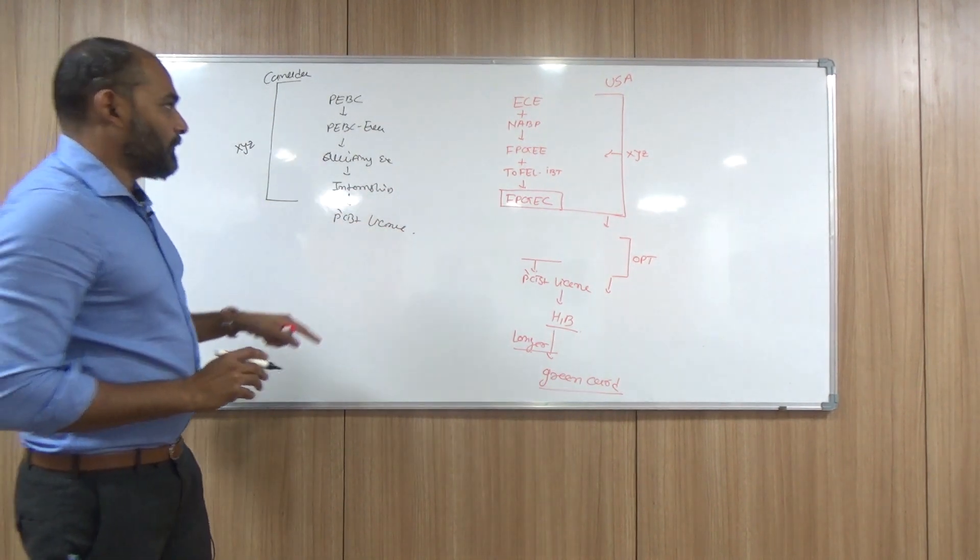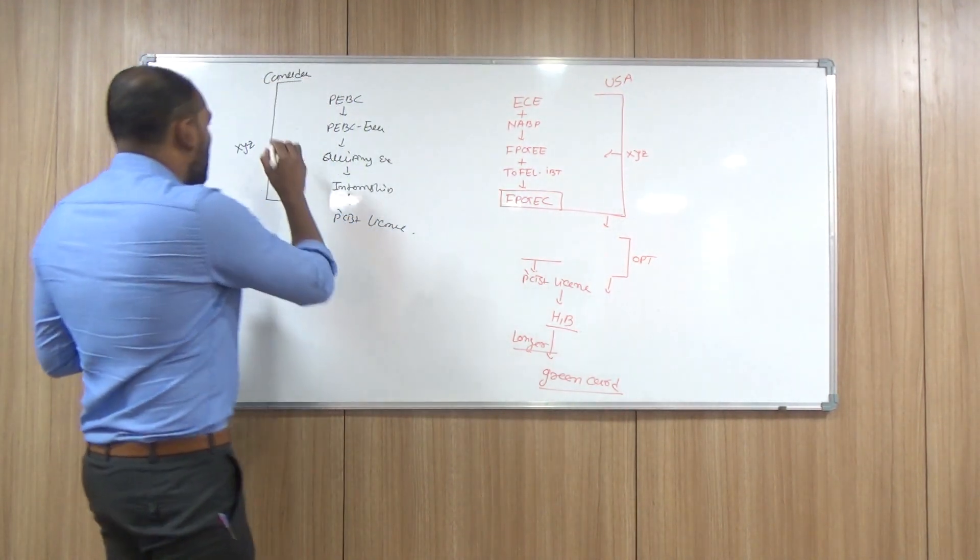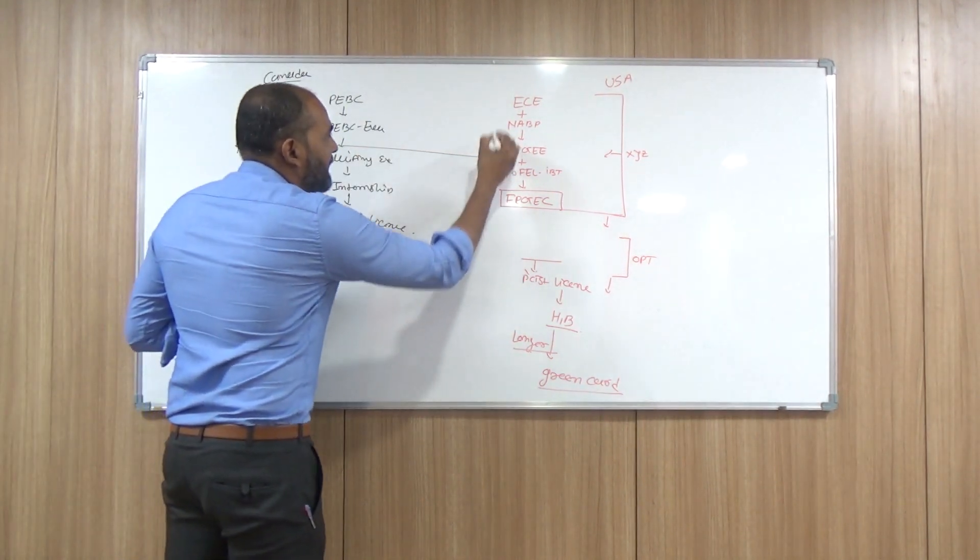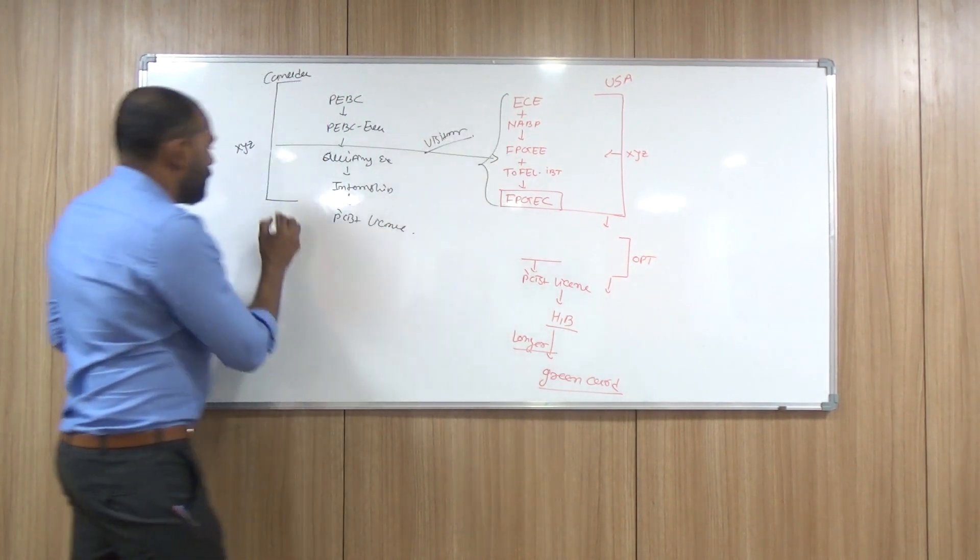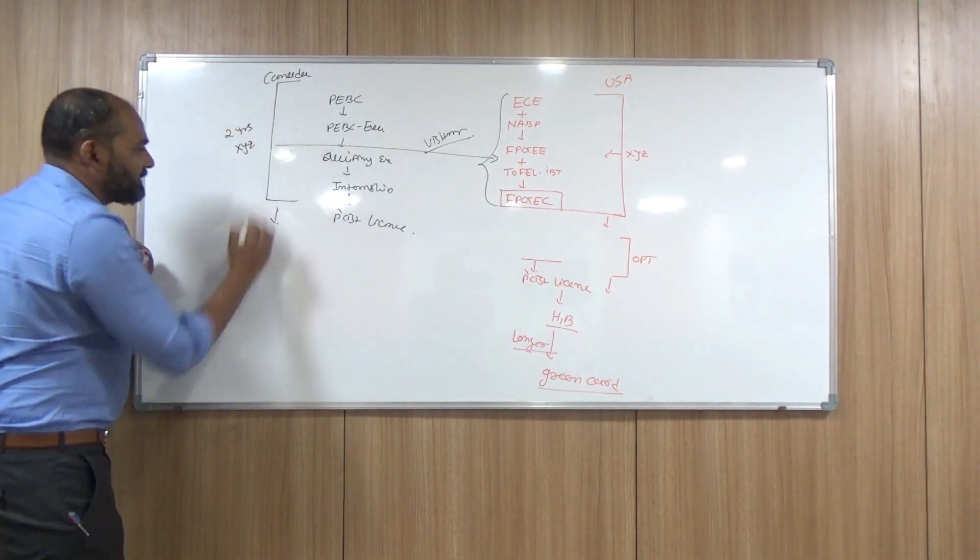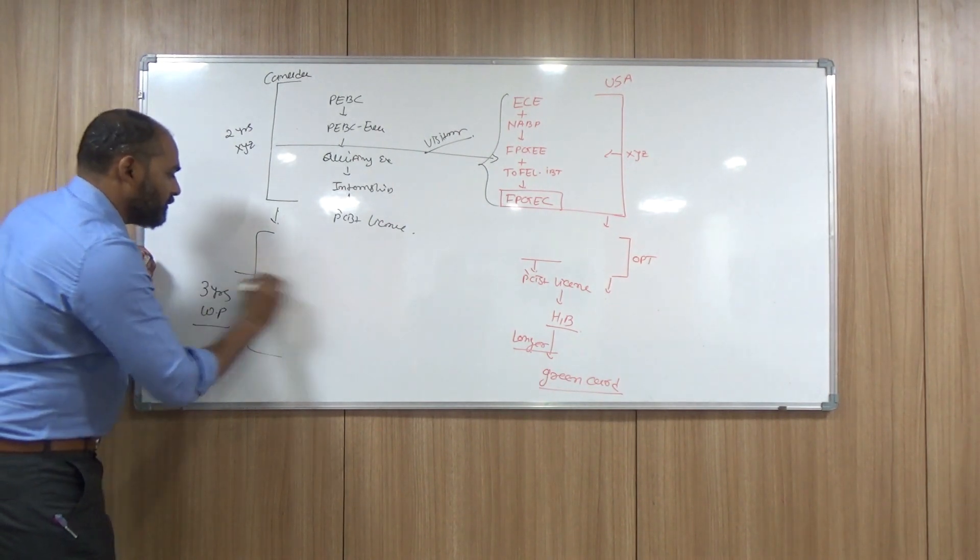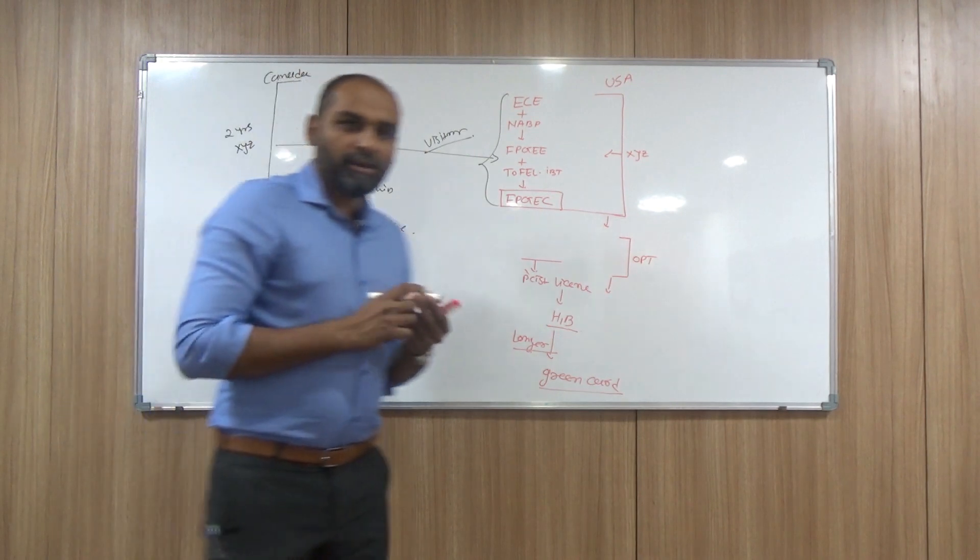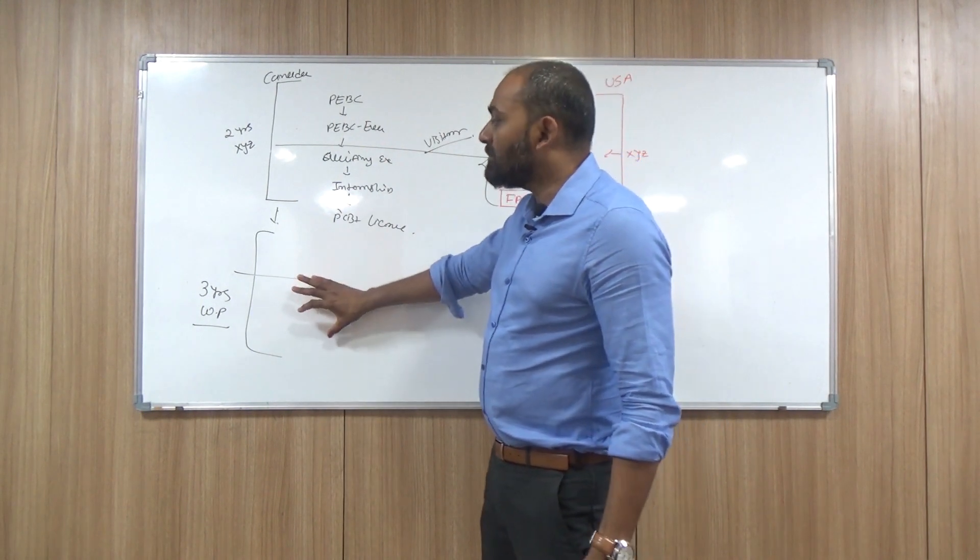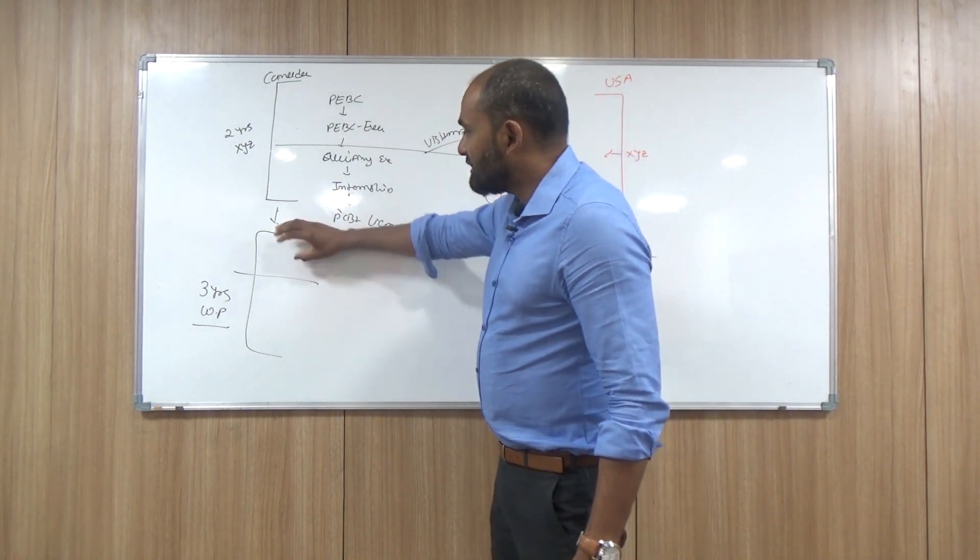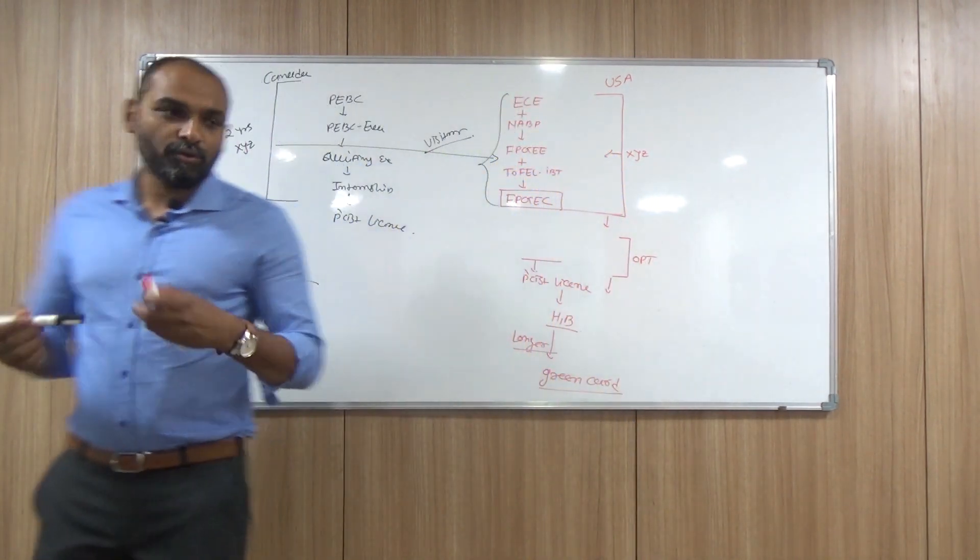This is one thing: PEBC and FPGEC both have a similar kind of syllabus structure. So while you are in Canada, you can complete this entire process as a student. Based upon this two-year study in Canada, you will get a three-year work permit. So you have more protection—if you are going to study for two years, you will get a three-year work permit, which means you have a longer period of time to settle down. Out of three years, within the first year, you can work as a pharmacist and more likely you will get your permanent residency.